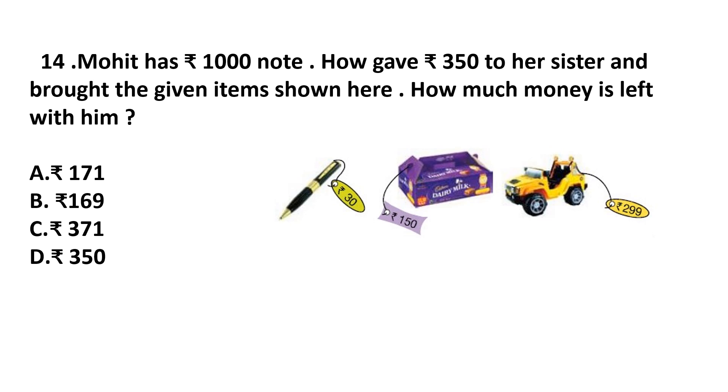Question number 14. Mohit has Rs. 1,000 note. He gave Rs. 350 to her sister and bought the given items shown here. How much money is left with him? First, he has Rs. 1,000 note and he gave Rs. 350 to her sister. So how much money is left with him now?